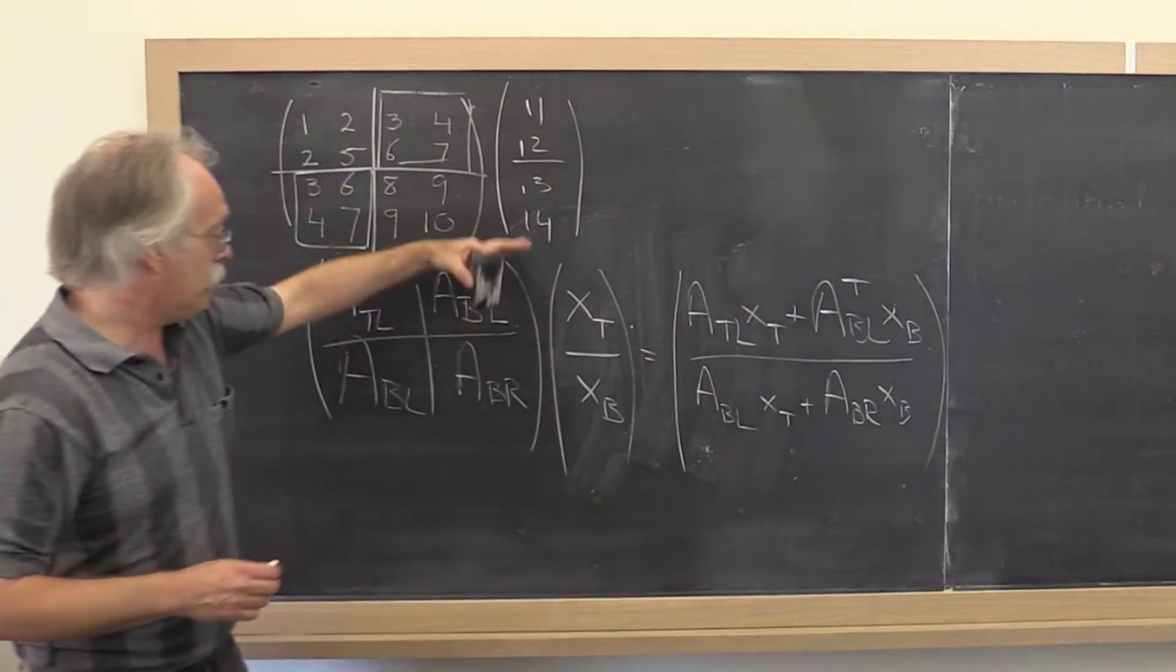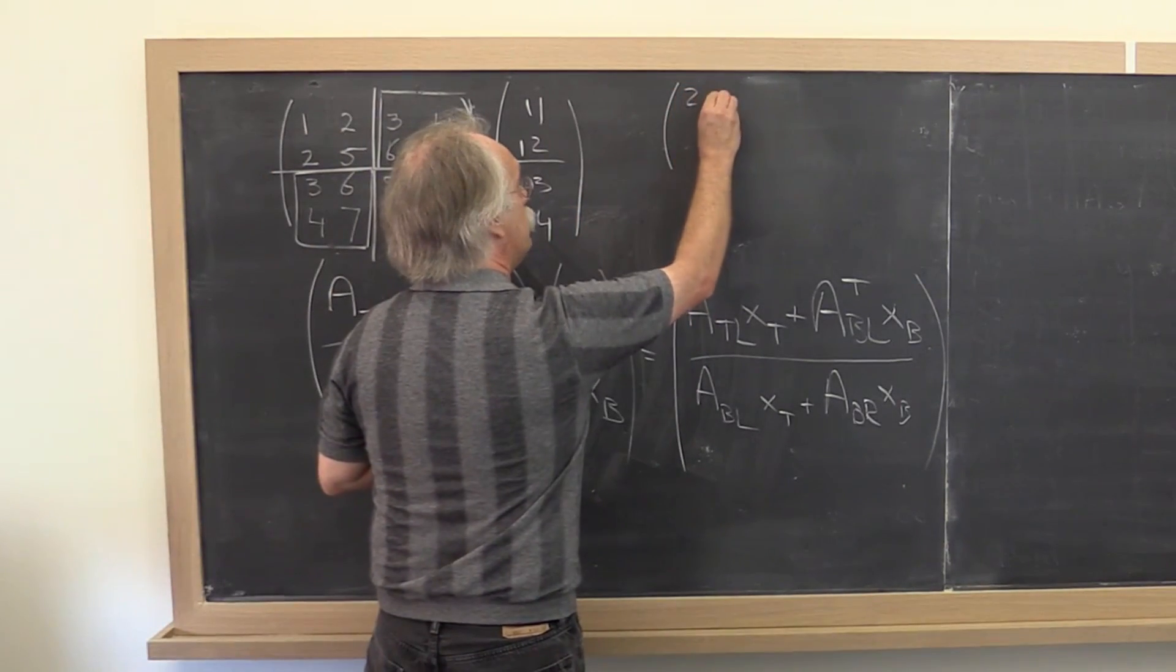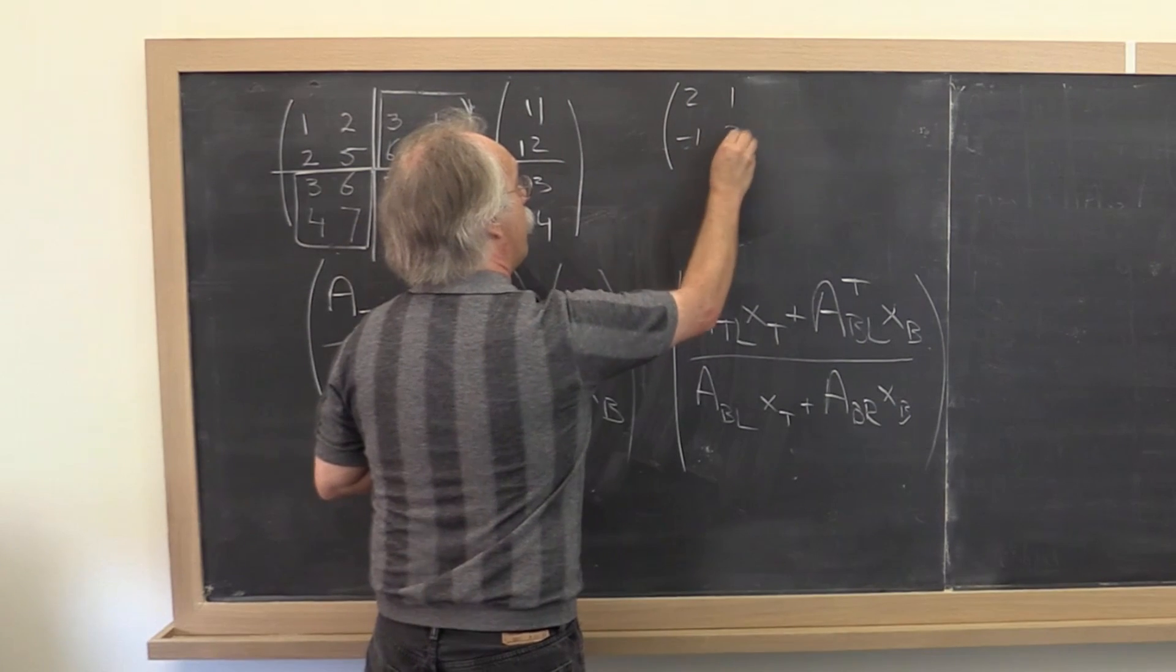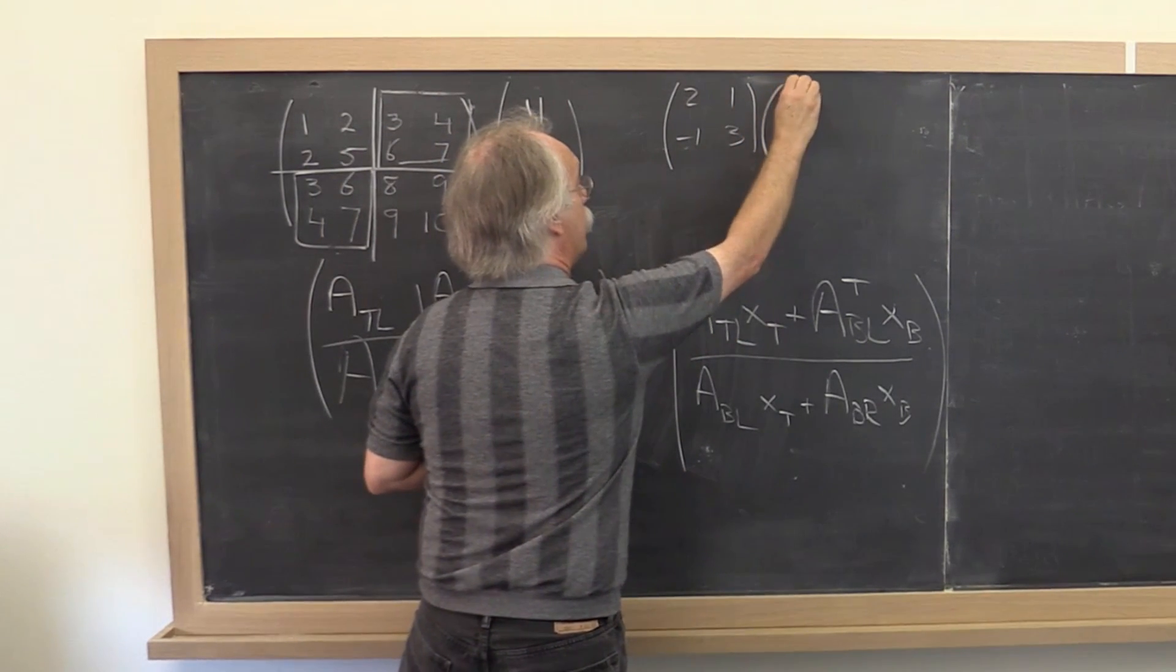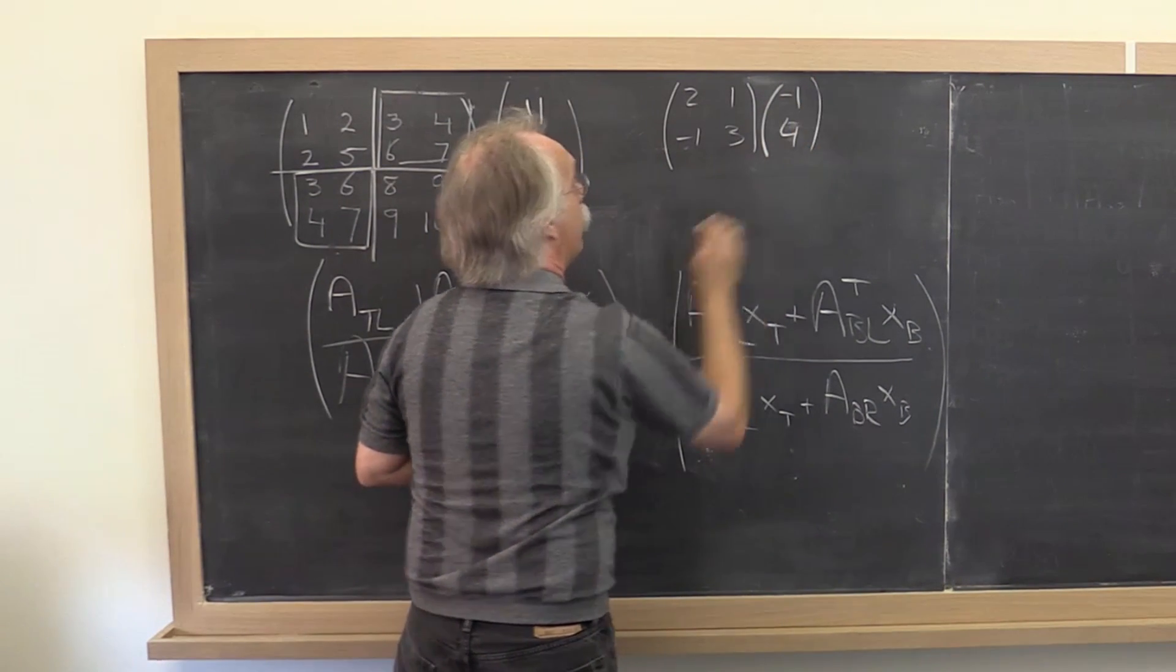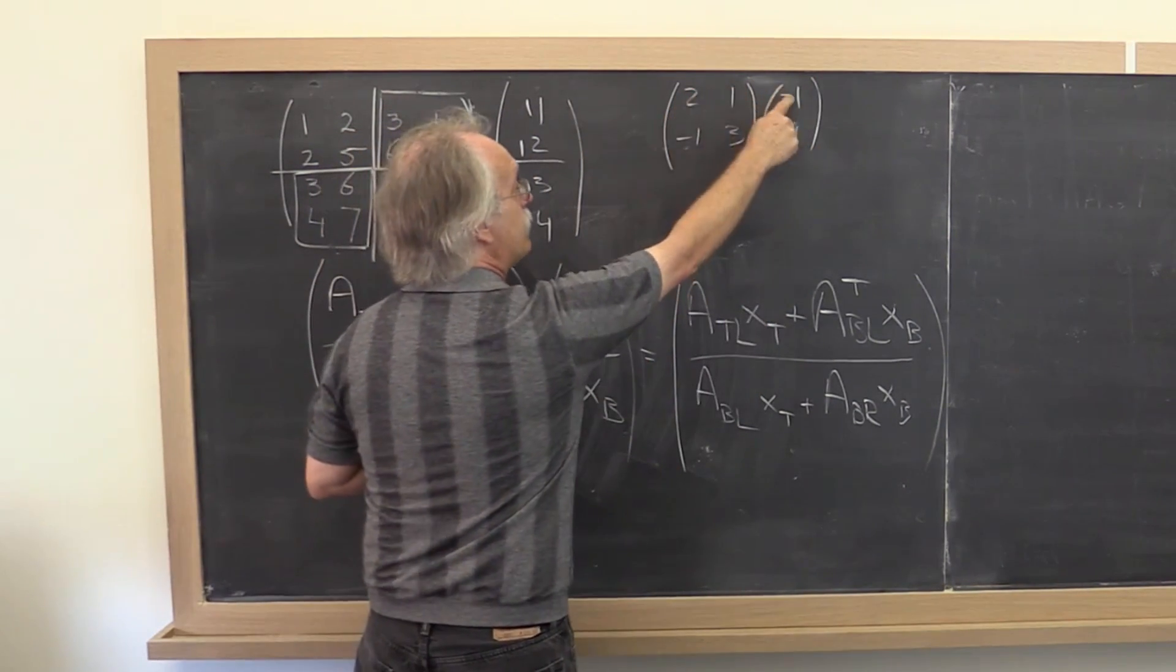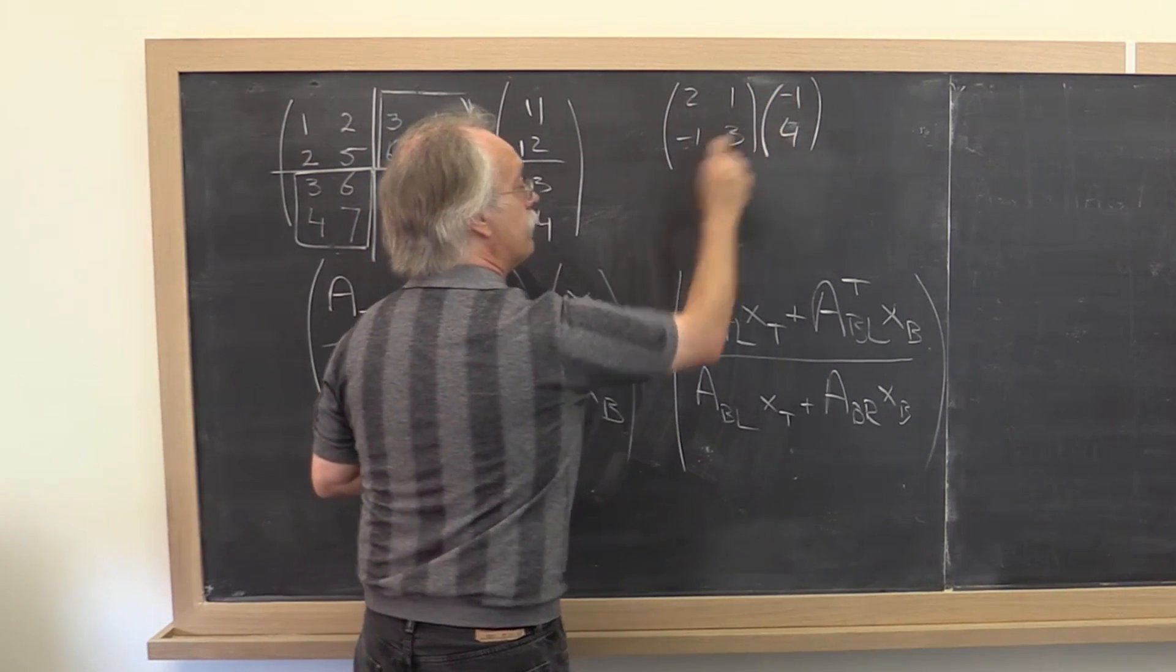Now how do I remember this? I always go back and say, well, if I had a 2 by 2 matrix that I multiplied times a vector, then I would do it as that times that plus that times that for the top part and this times that plus this times that for the bottom part.